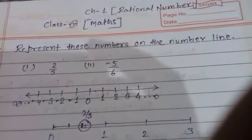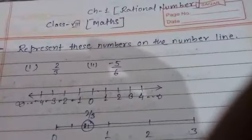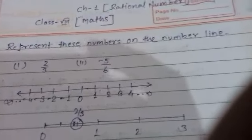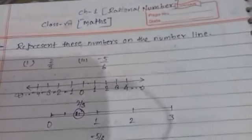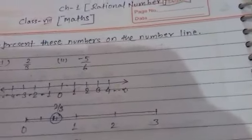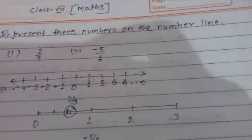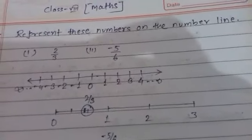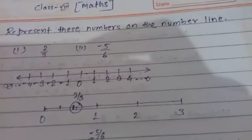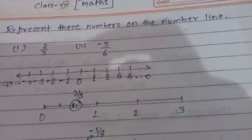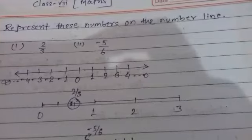So now take a look at the first question: represent these numbers on the number line. Here two rational numbers are given, one is positive and the other one is negative. When we are going to represent a rational number on the number line, first we notice that the given rational number lies between which two rational numbers.